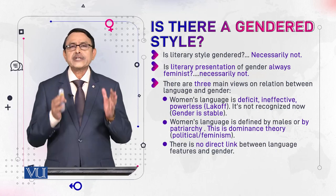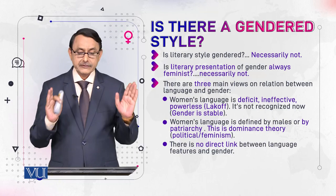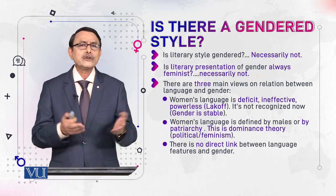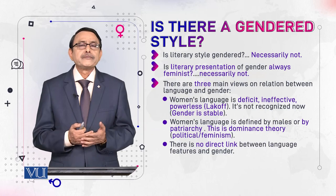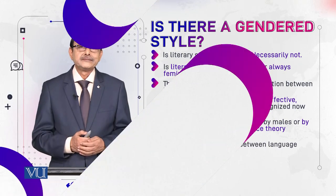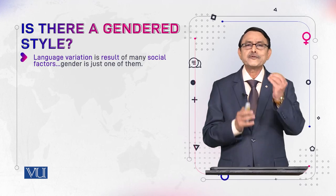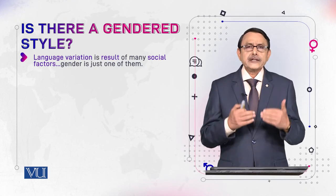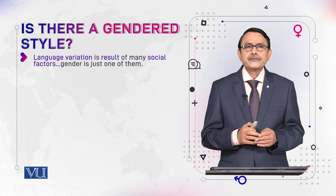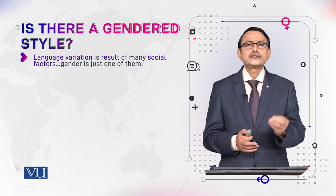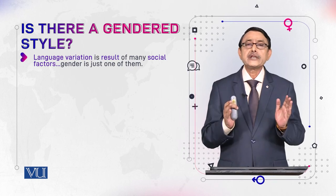The third view, which is directly related with our current discussion, is that there is no direct link between language features and gender. So how can we say that fragmentary sentences are only used by female authors? Why can't male authors do that? Language variation is the result of many social factors and gender is just one of them. We vary language according to our profession, our roles and relations, our class. Many things — and gender is just one factor that causes variation in our choice of language. So how can we make a direct link with gender?